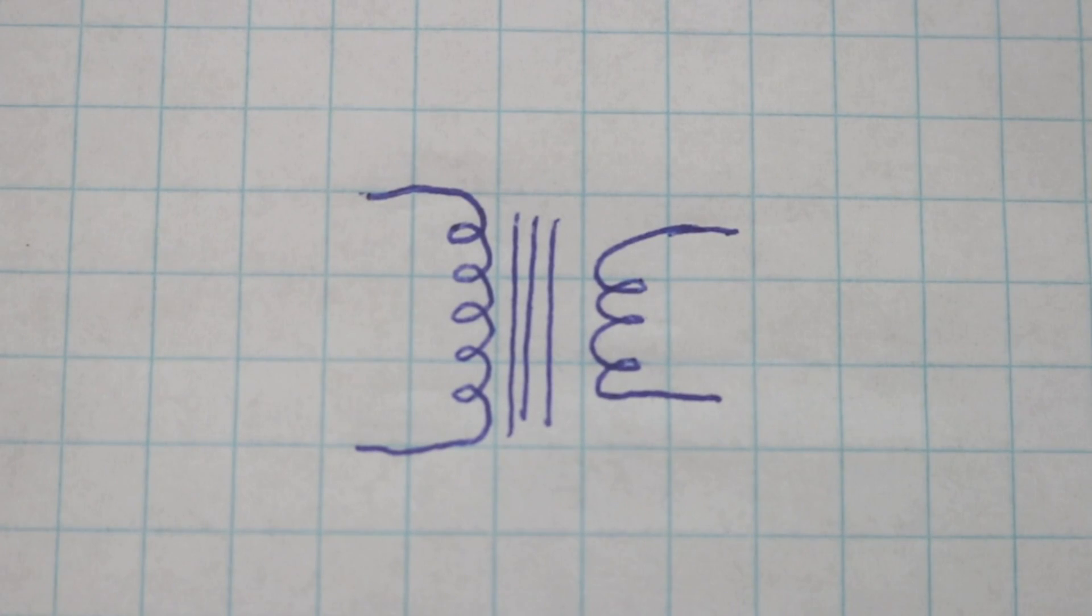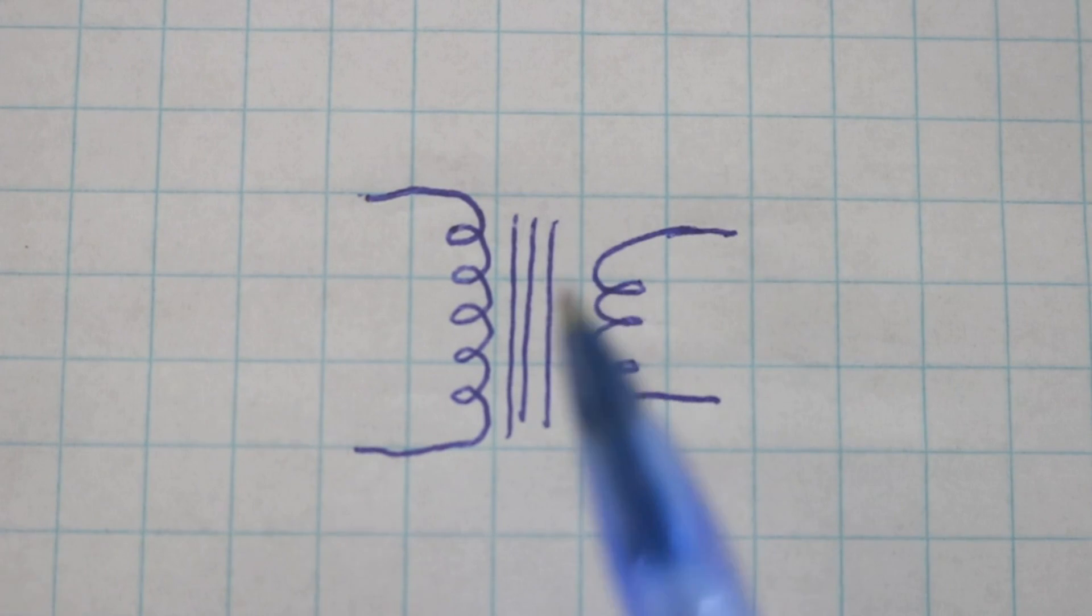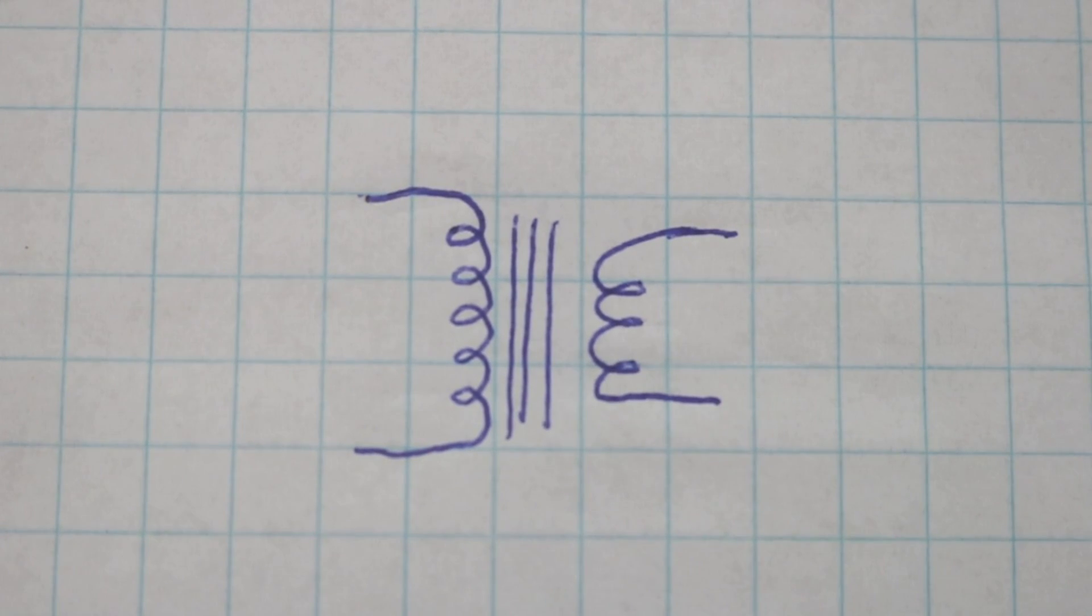The transformer is a very simple device. It consists of two coils that are wound around an iron core, so you can transfer energy from one coil through the other through electromagnetic induction.